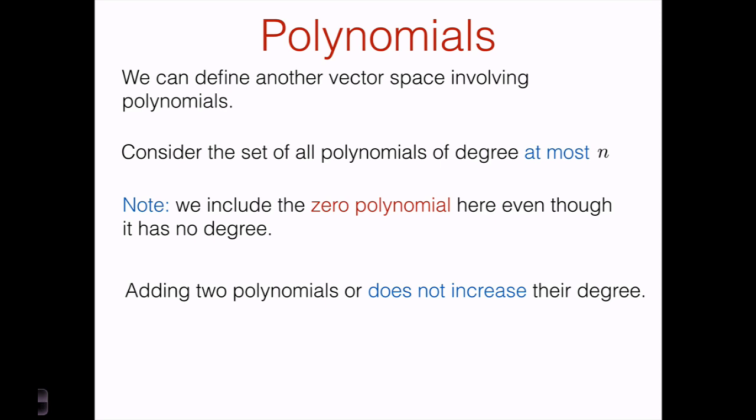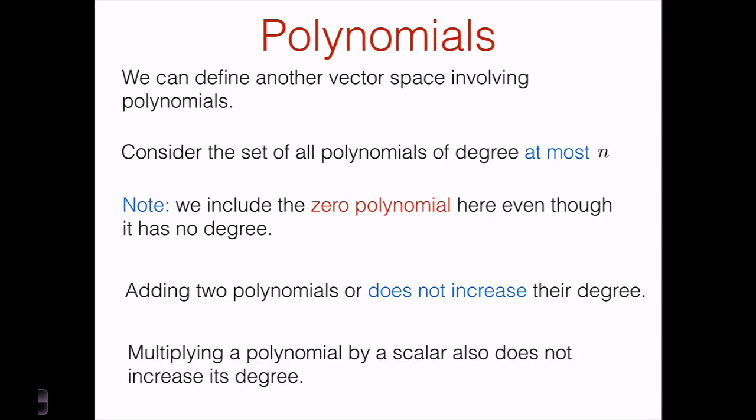Let's check why the set of polynomials of degree at most n is closed under addition and scalar multiplication. The key point is that if we add two polynomials, we're not going to increase their degree. The same holds for scalar multiplication — multiplying a polynomial by a scalar does not increase its degree. Therefore, the set of polynomials of degree at most n is closed under addition and scalar multiplication, and with the zero polynomial included, it also has a zero element.